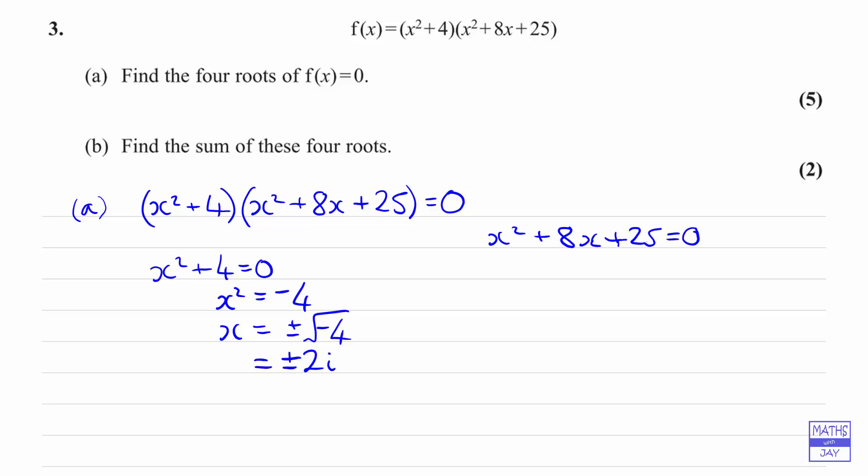So we're going to need to use the formula. We've got that x is equal to -b, so -8, plus or minus the square root of b² - 4ac. So that's 64 - 4 times 25, and then we're dividing by 2 times 1, so dividing by 2.